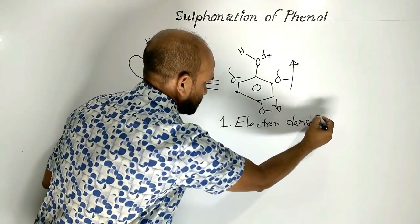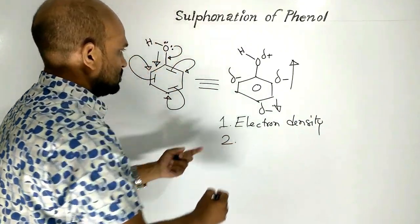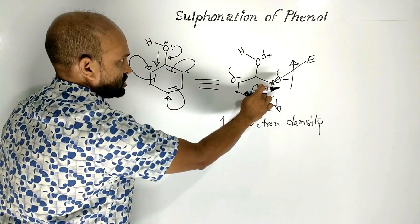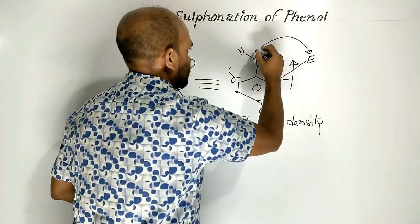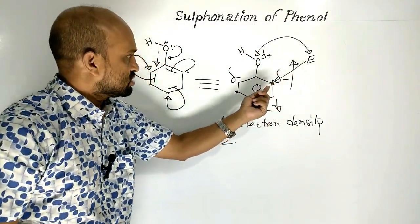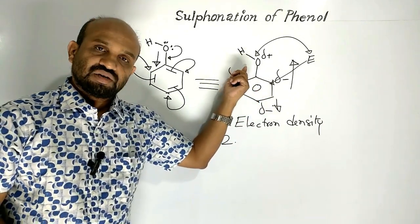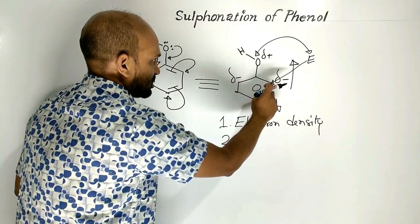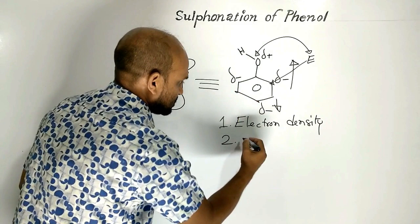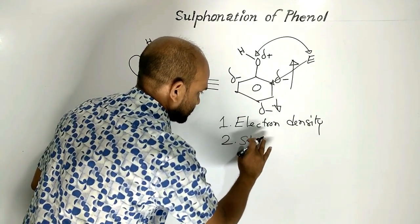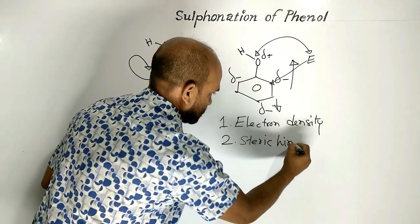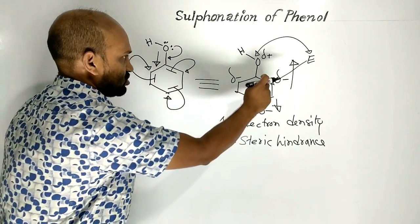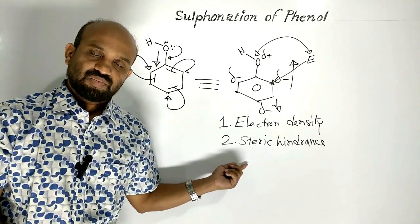Two points are involved. The first point is electron density — ortho position is nearer to the hydroxyl group and is electronically dense, while para position is electronically thin. The second point is steric hindrance. When an electrophile combines with the ortho position, it suffers steric hindrance with the hydroxyl group. At para position, steric hindrance is negligible.